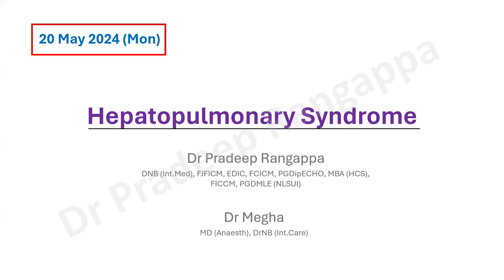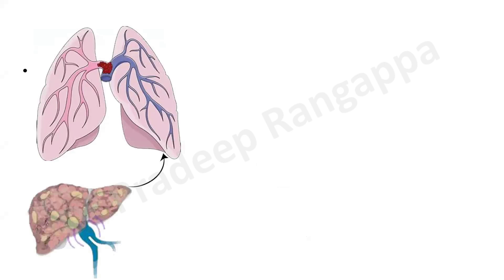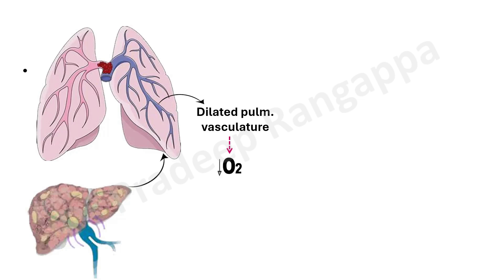What do we understand by hepatopulmonary syndrome? There is basically dilatation of the pulmonary vasculature in the context of advanced cirrhosis of the liver, which leads to hypoxemia. There is an intrapulmonary shunt that develops, and the dilated pulmonary vasculature leads to hypoxemia.